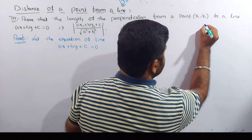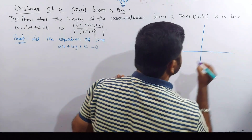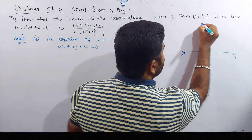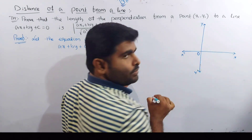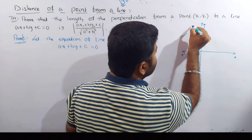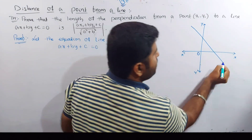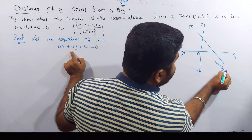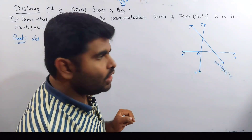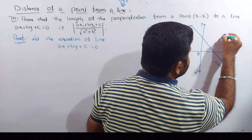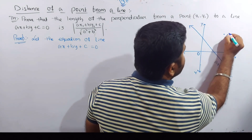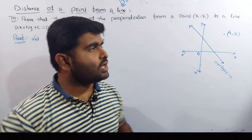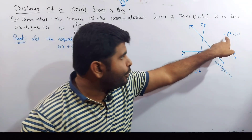First we have a diagram. So we have an idea of what we can find. Suppose that x, x prime, y, y prime — this is the original setup. The equation given is ax plus by plus c equal to 0. Now we choose the point to a line: this is x1, y1.